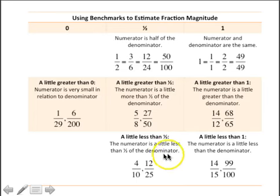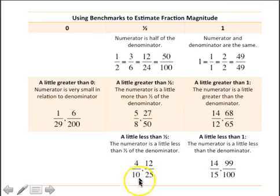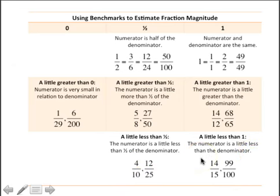We also want to think about numbers that are a little less than our benchmarks. A number a little less than one-half has a numerator a little less than half of the denominator — for example, four-tenths, since five-tenths would be equivalent to one-half and four-tenths is just a little less. And a little less than one means the numerator is a little less than the denominator — 14-fifteenths, since 15-fifteenths would be equivalent to one and 14-fifteenths is just a little bit less.